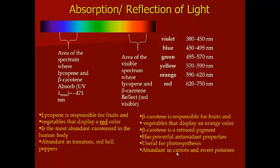Beta-carotene is responsible for fruits and vegetables that display an orange color. It's a retinoid pigment and a powerful antioxidant, useful for photosynthesis. It's abundant in fruits and vegetables, especially carrots, sweet potatoes, yellow bell peppers, and similar vegetables.